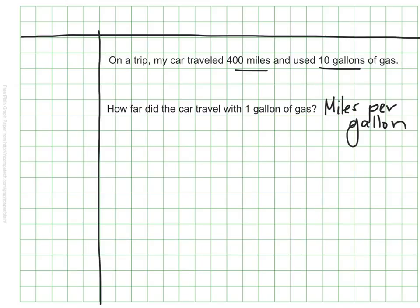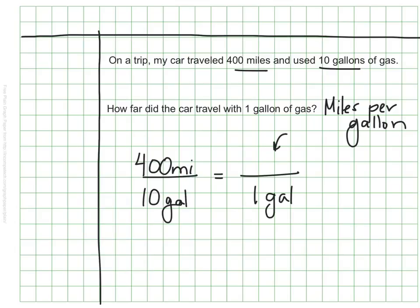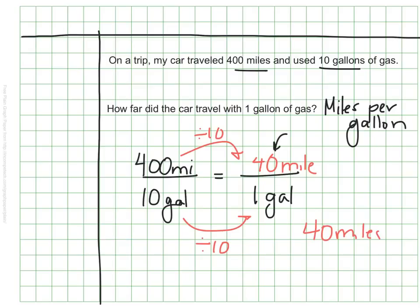One way we could solve this is to set this up with equivalent ratios. I was able to go 400 miles with 10 gallons of gas. Since I'm making a unit rate, I want my denominator to be one gallon. I'm taking this 10 and dividing it by 10, and I'll do the same thing to the top of my ratio. 400 divided by 10 is 40, so I know that I was able to go 40 miles per gallon. That's my unit rate — 40 miles per gallon.